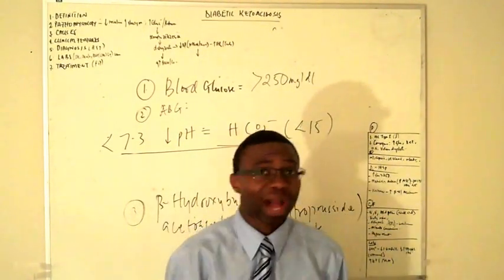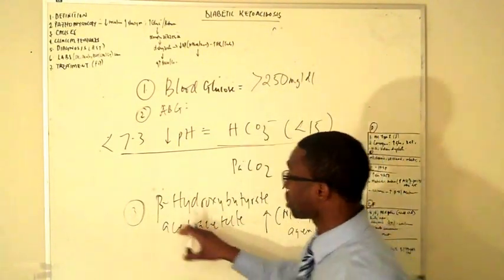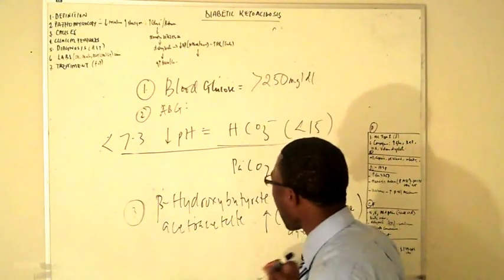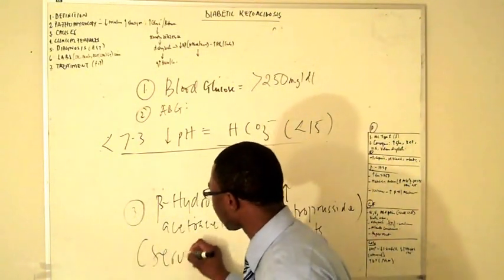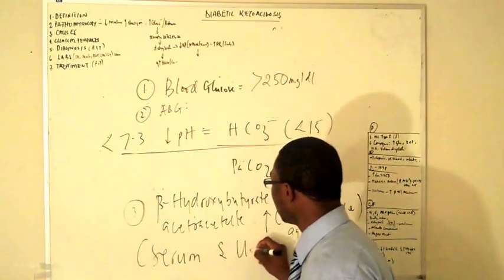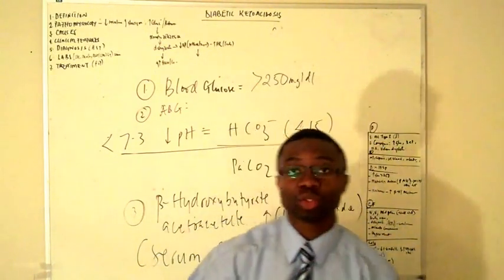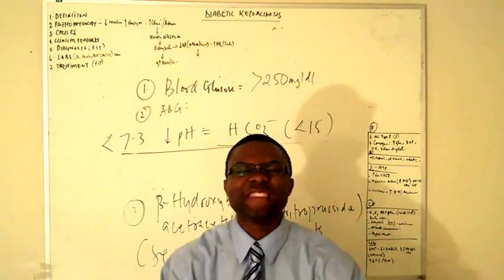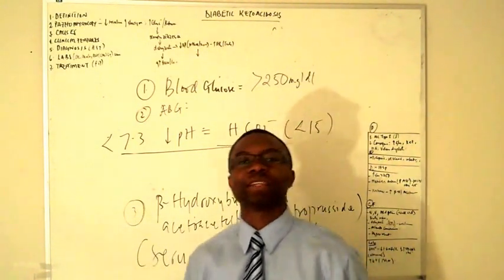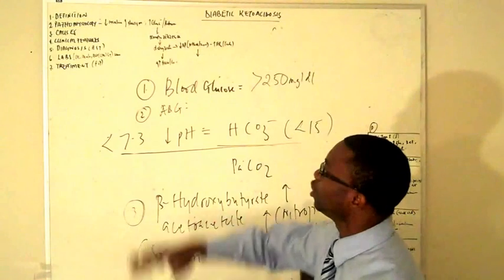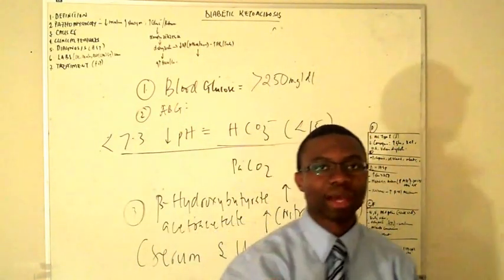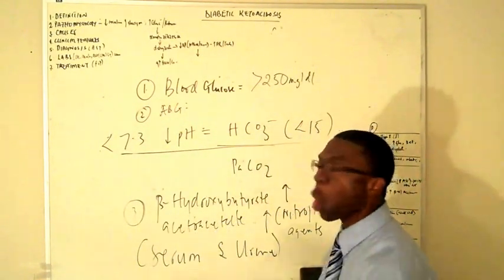You don't have to worry about how they measure it. The point is just know that. They're gonna be very high. So you check it in the serum and you check it in the urine. Ketonemia, ketonuria. Elevated in the urine, elevated in the blood. Guess what? You have nailed it. Game over.